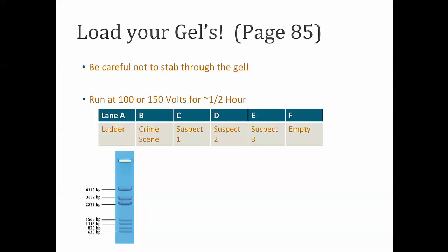So it's kind of like the legend on a map. If a piece of DNA, let's say the crime scene had one piece of DNA that moved this far, you would be able to tell that that piece of DNA was about 6,700 base pairs long.